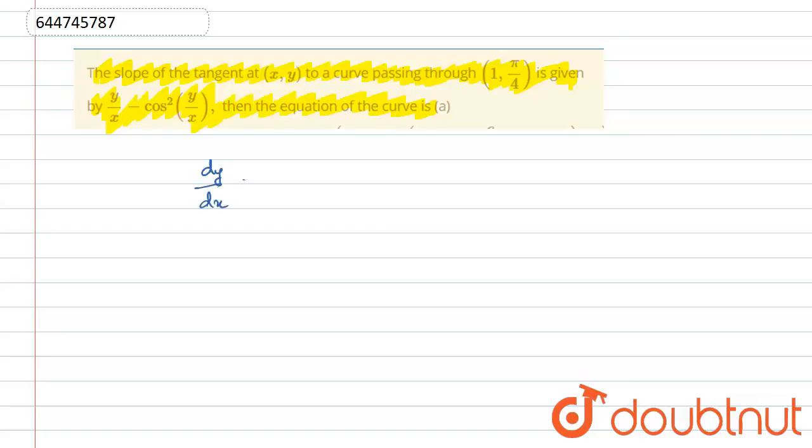First of all, we will write this condition mathematically: dy/dx equals y/x minus cos²(y/x). We can see that this equation will make a homogeneous equation.